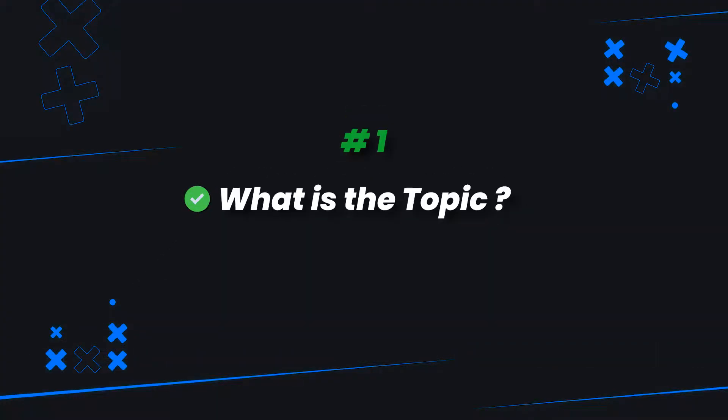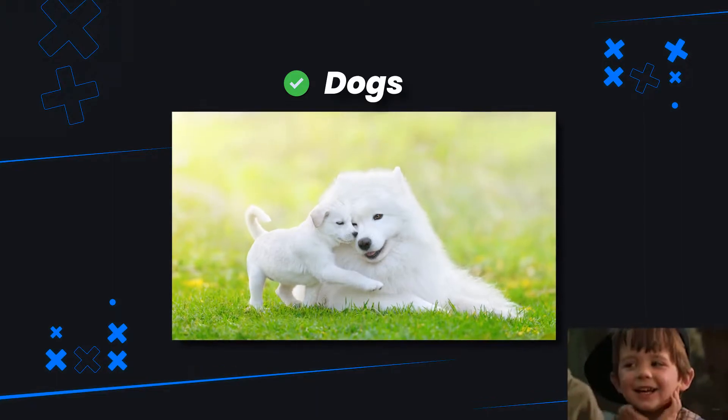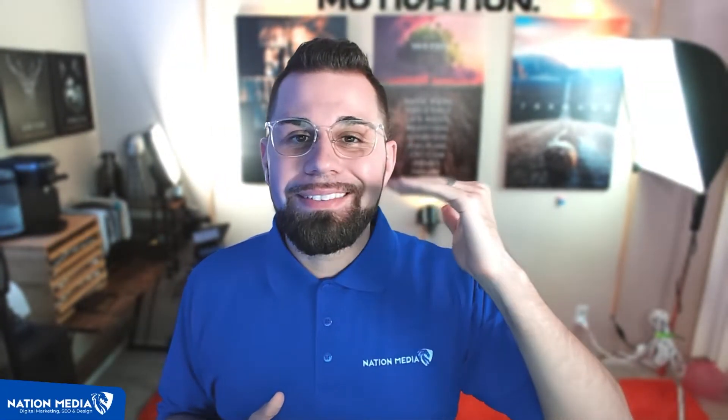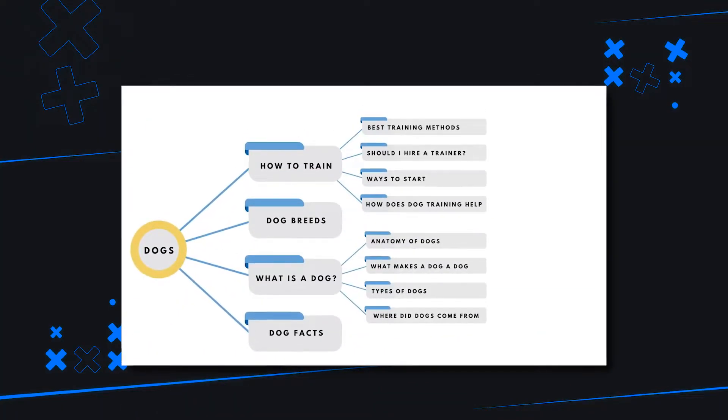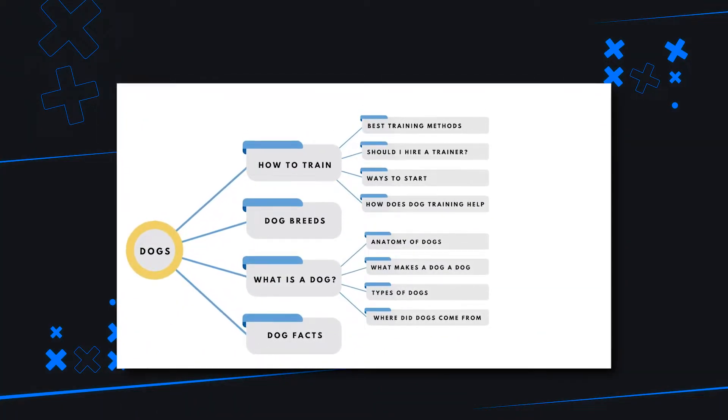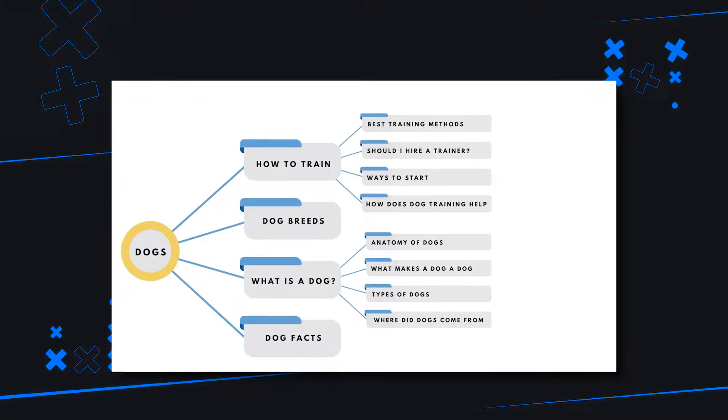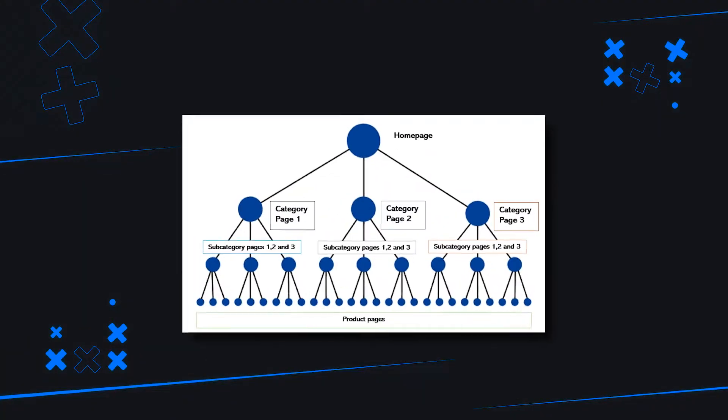When it comes to a topical map, here's a brief list of things you're going to have to think about and need to know as you create it. Number one: what is the topic that you're going to be focusing on? This can be a myriad of different things. For my example, we're going to focus on dogs. From a hierarchy standpoint, we're going to start from the very top topic — which is dogs — and then break it down into other categories that list and describe information about dogs.